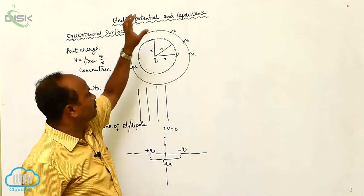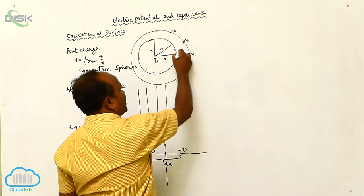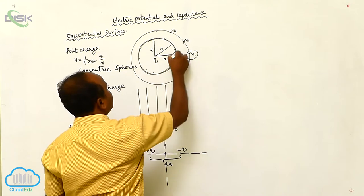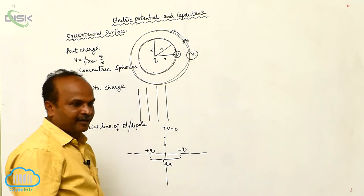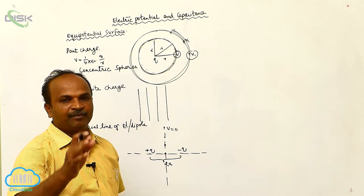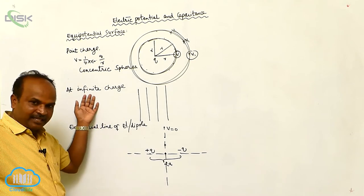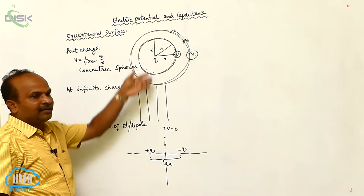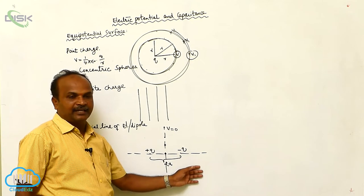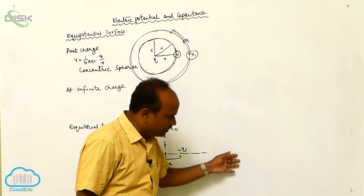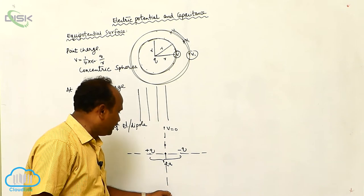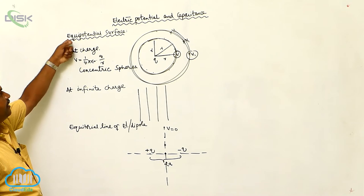Consider another sphere — the potential on it is V1. The potential on the first sphere is different from the potential on the second sphere, but on a particular sphere at every point the potential is the same. If the charge is at infinity, the equipotential surfaces are plane surfaces. Another example: in an electric dipole there is an axial line and a perpendicular bisector line. On the perpendicular bisector line at every point the potential is zero, so the equatorial line of an electric dipole is an equipotential surface.